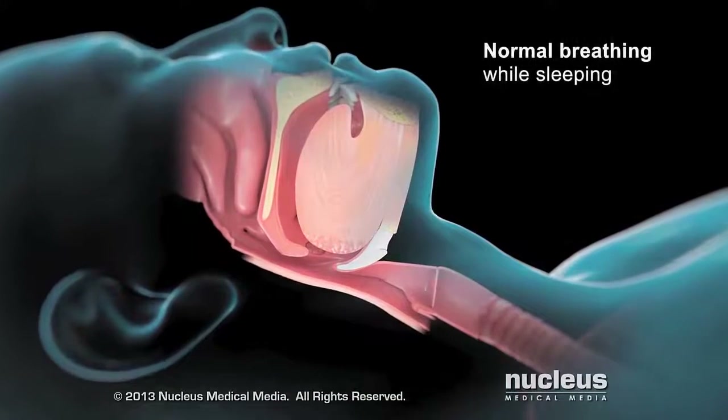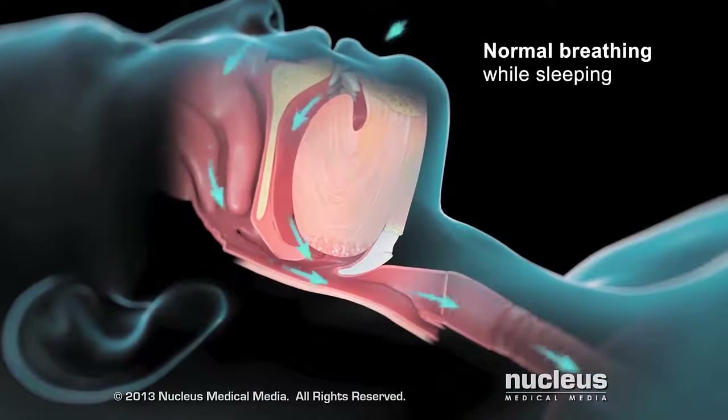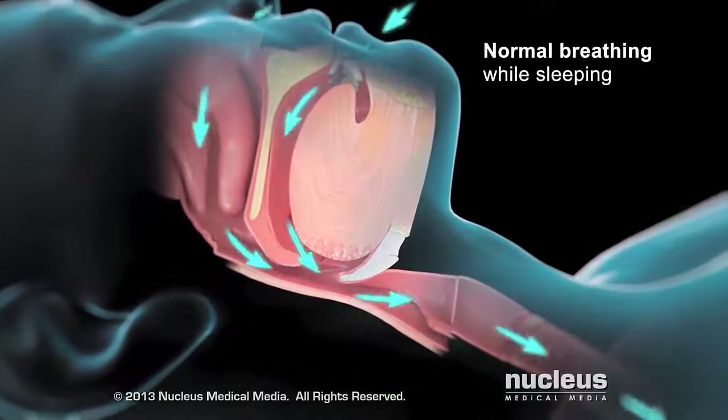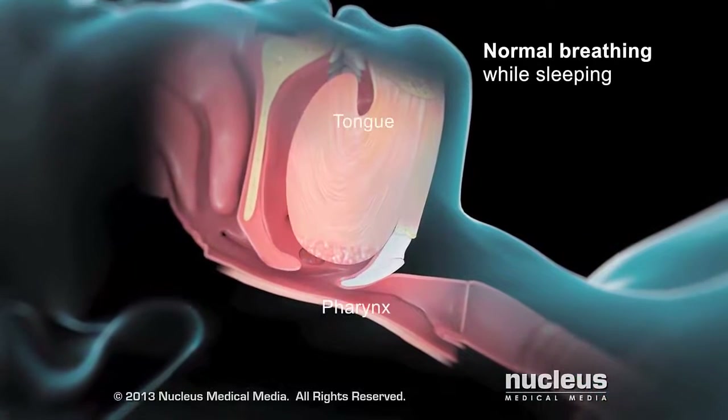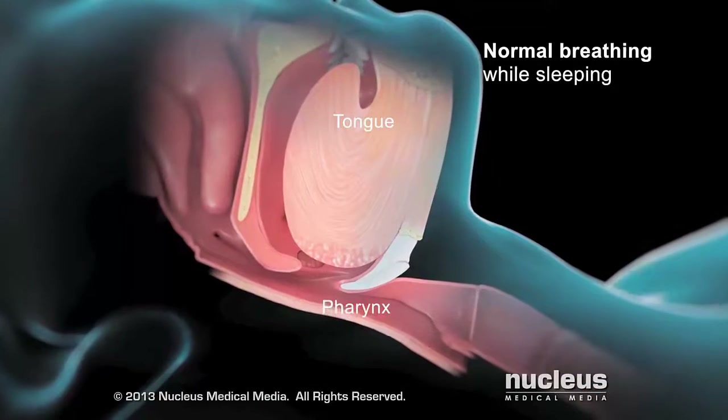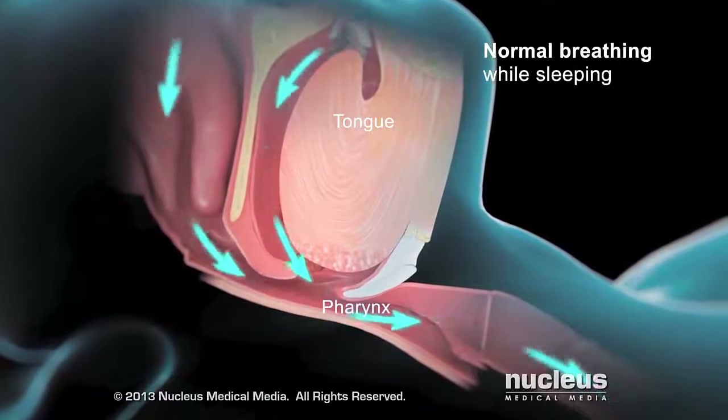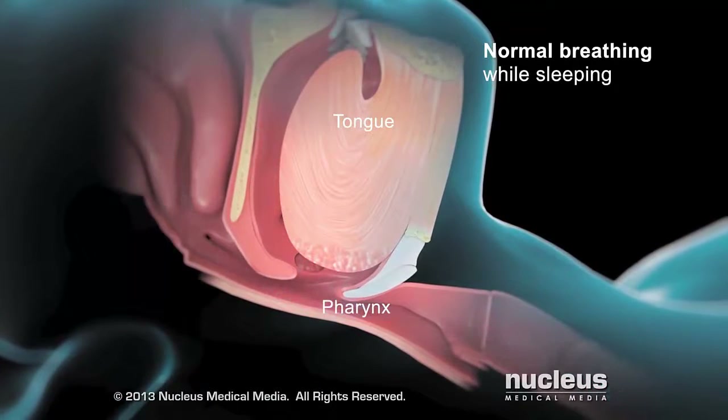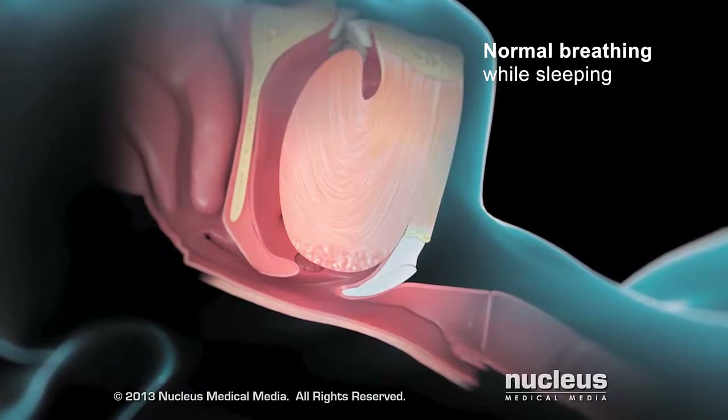When you sleep, it's normal for the muscles in your mouth, tongue, and pharynx to relax slightly, but not enough to block your airway.